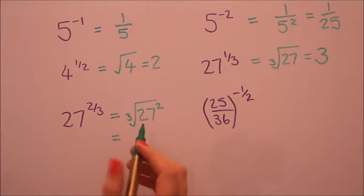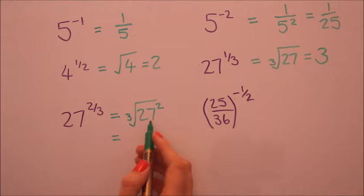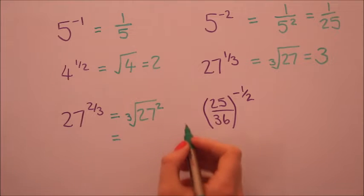So now you can do the square or the cube root either way round. Obviously it's more helpful and easier to do the cube root before you square it. Otherwise twenty seven squared is quite a big number. So the cube root of twenty seven is three and then that squared would be nine.